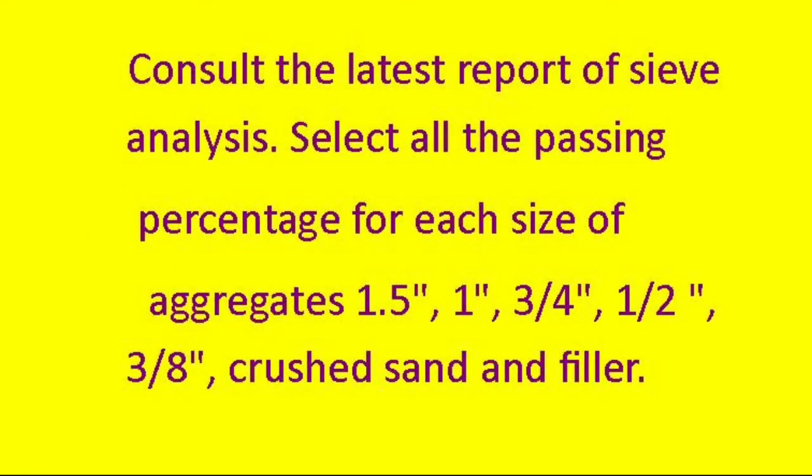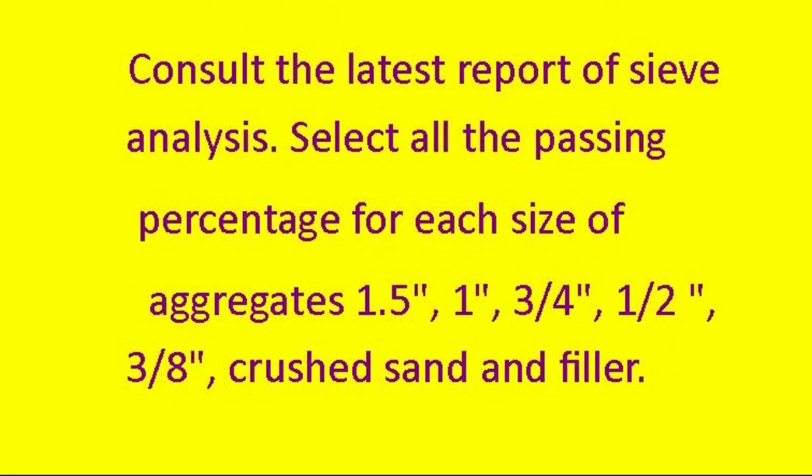Consult the latest report of sieve analysis. Select all the passing percentage for each size of aggregates: 1.5-inch, 1-inch, 3/4-inch, 1/2-inch, 3/8-inch, crushed sand, and filler. Consult the sieve analysis reports.